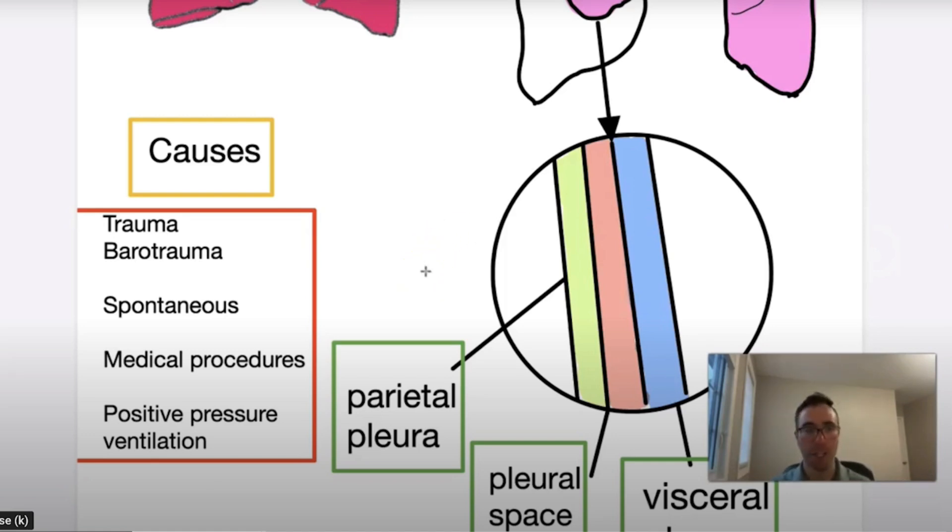And positive pressure ventilation: if we are overzealous, over-vigorous with our ventilations, especially those patients that are high risk of tension pneumothoraxes or collapsed lungs, such as cystic fibrosis, COPD, asthma, that can lead to a tension pneumothorax. That's why we have to be diligent and judicious when we ventilate patients.